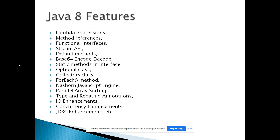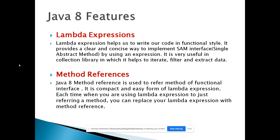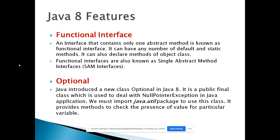Lambda expressions represent a functional programming style in Java 8. When you need a single abstract method interface, Java 8 supports functional-style programming through functional interfaces. These interfaces contain only one abstract method. We write lambda expressions to use these single abstract method interfaces. We can also use method references — when writing lambda expressions, we can call methods within functional interfaces by referring to them using method references, which is a key concept in Java 8.